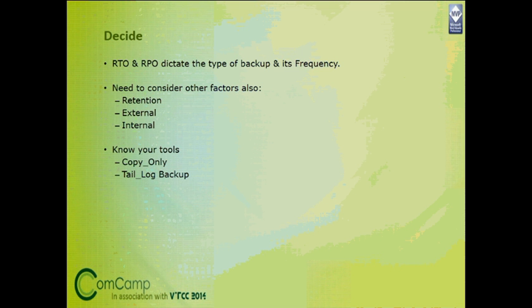The undo process takes care of all uncommitted transactions that were waiting to be rolled back. The time required for this stage also varies based on checkpoint settings. You should also consider two important restore options: NORECOVERY and RECOVERY. Use the RECOVERY option only for the last backup in the restore sequence.